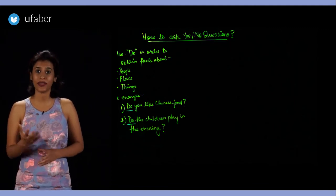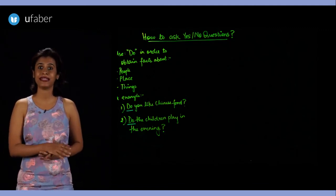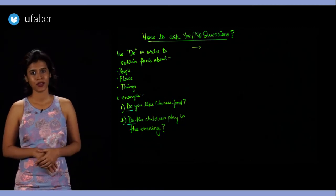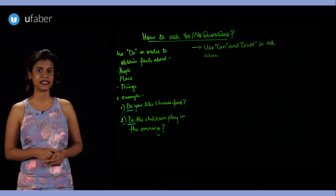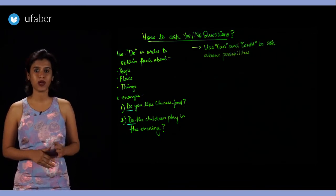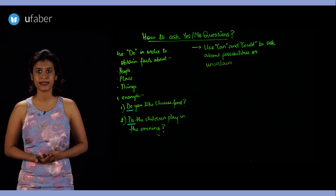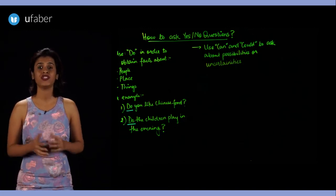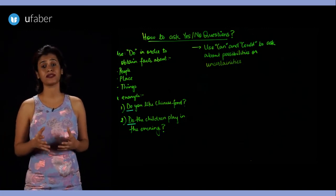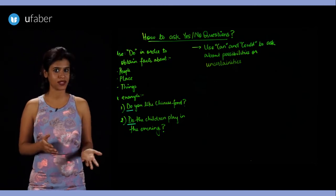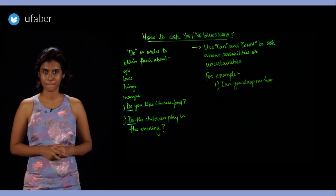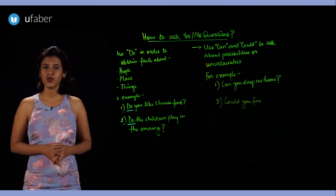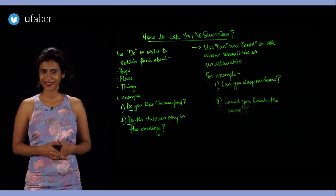The fourth rule says that we have to use can or could to ask yes or no questions about possibilities or uncertainties, meaning when you are not sure about whether something will happen or not. For example: Can you drop me home? Could you finish the work?